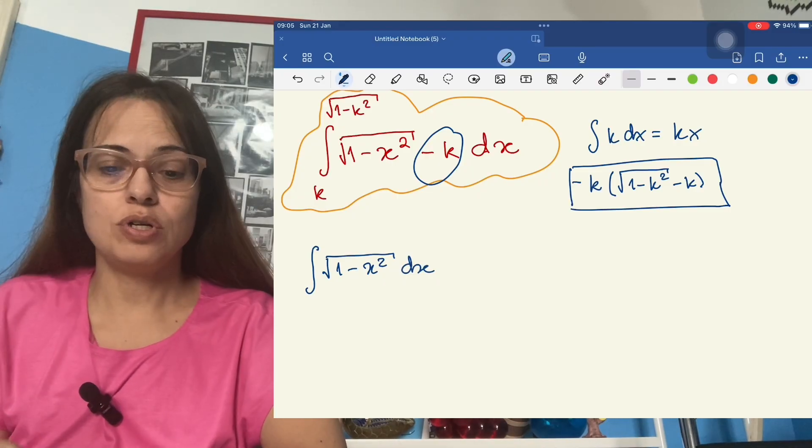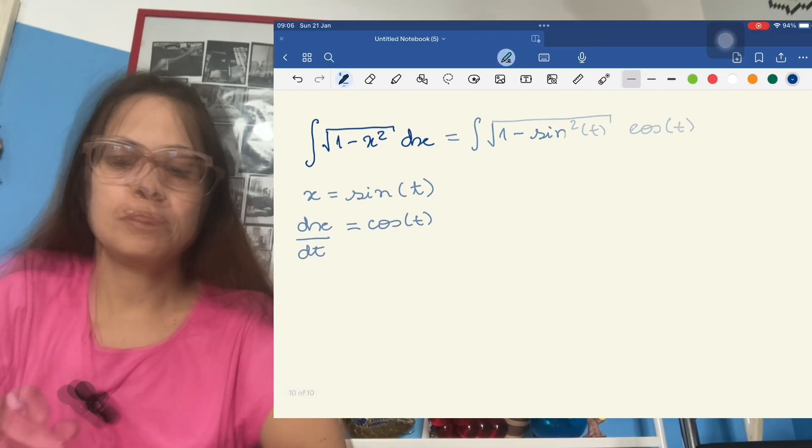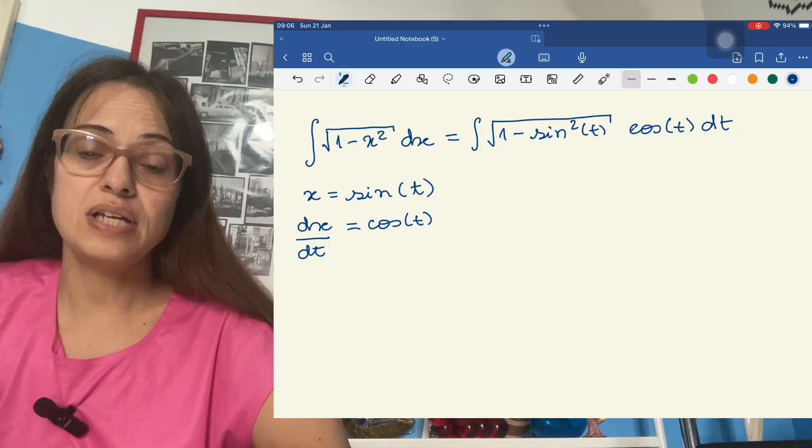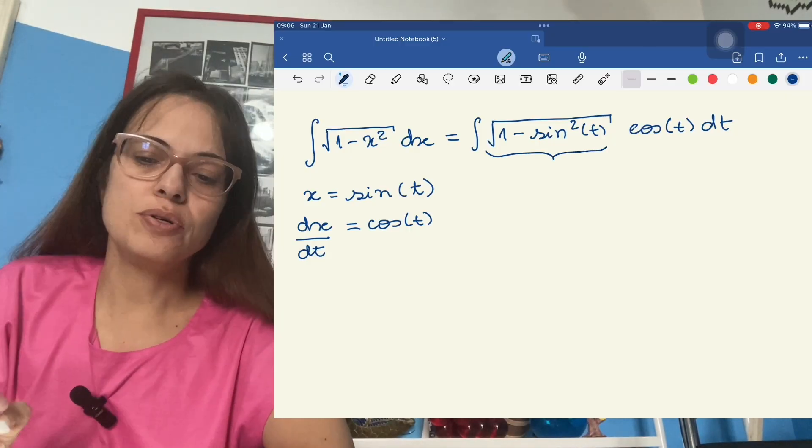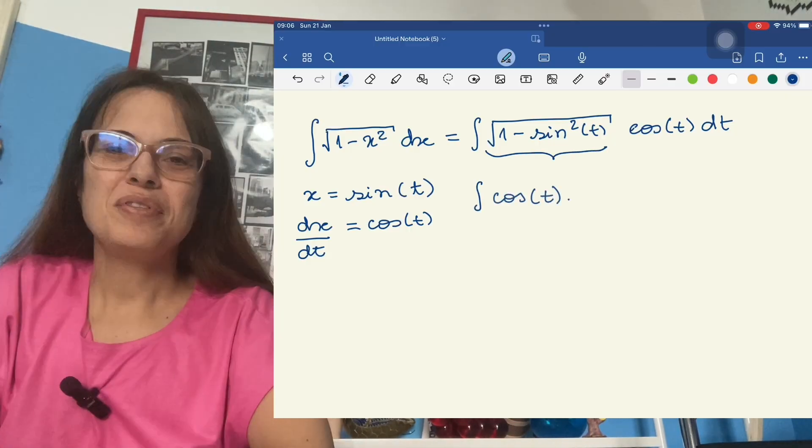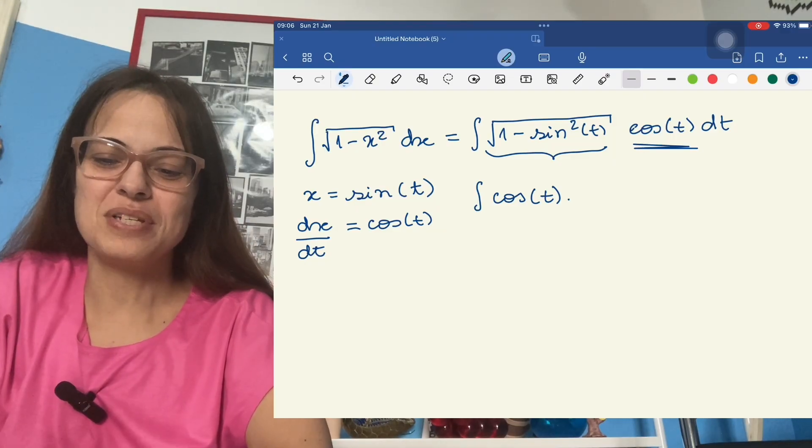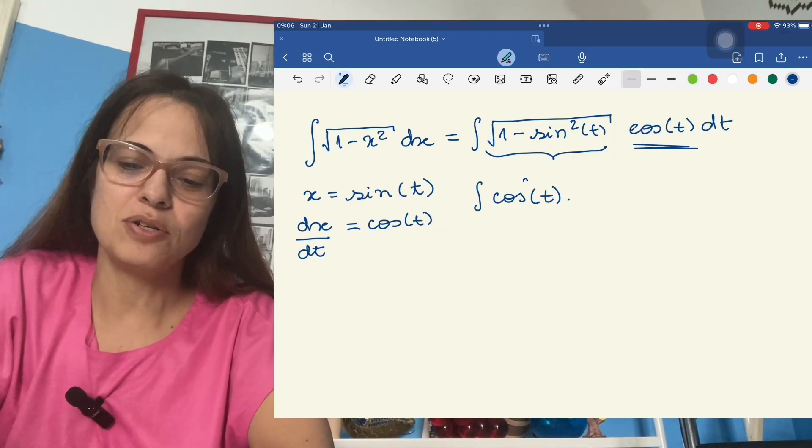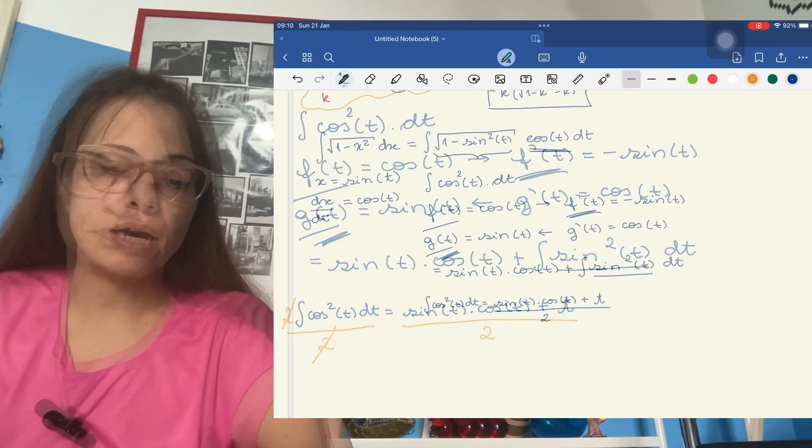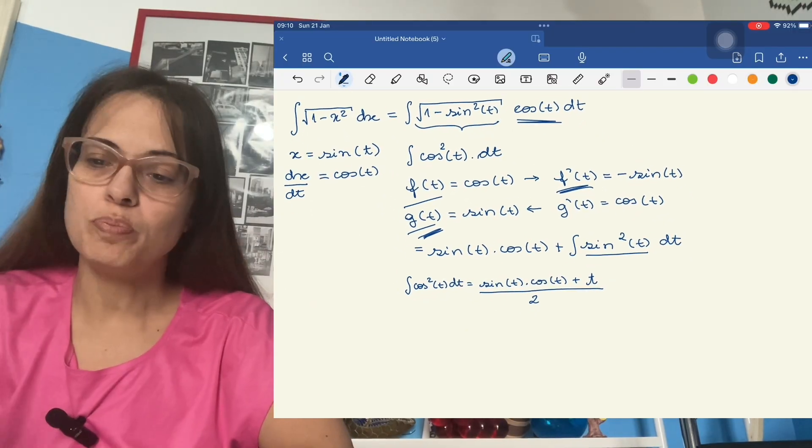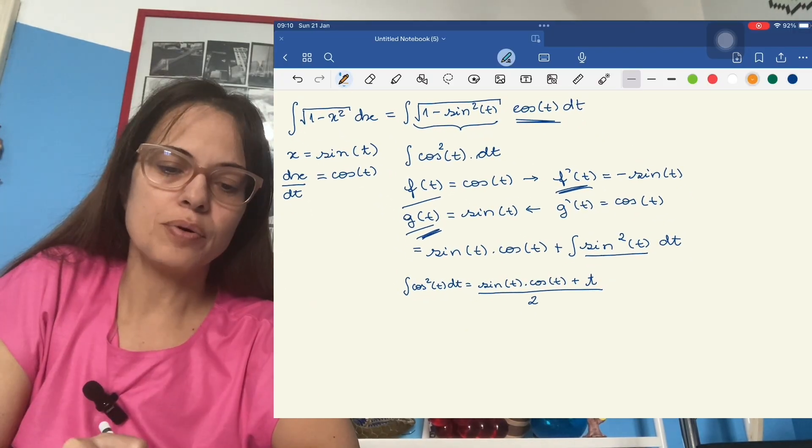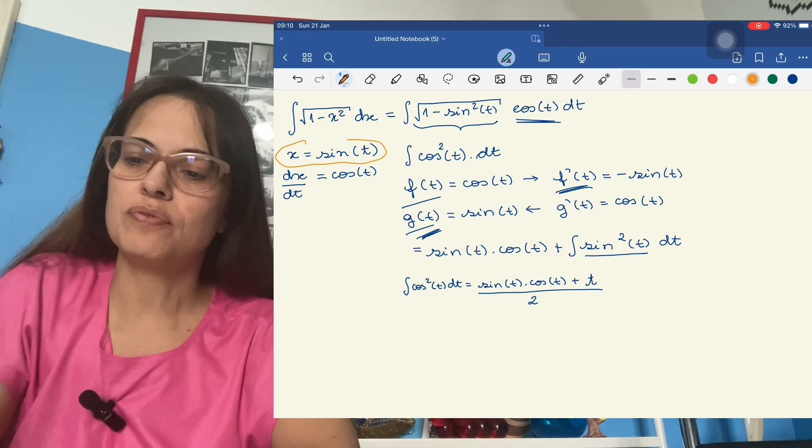And this looks like trigonometric substitution, cosine T dt for the dx. Now, this part is looking good because that is just cosine. But then this is annoying, isn't it? Because there is another cosine here. So it's cosine times cosine, which makes it a cosine squared.